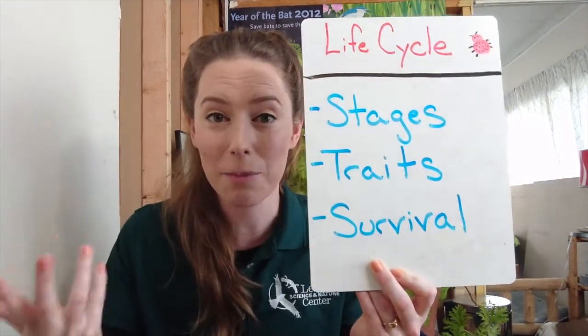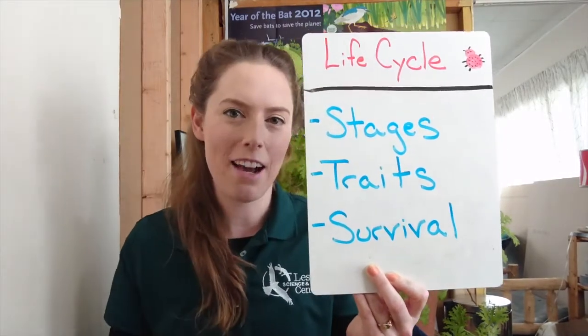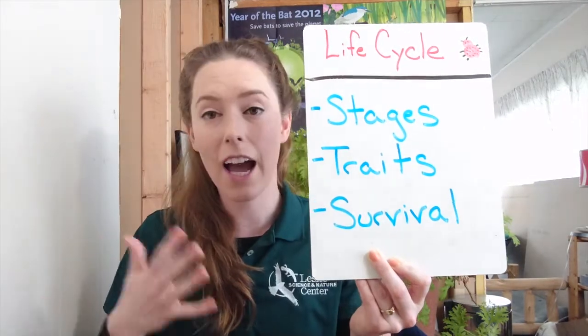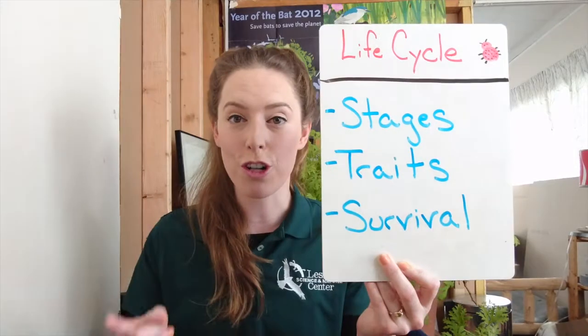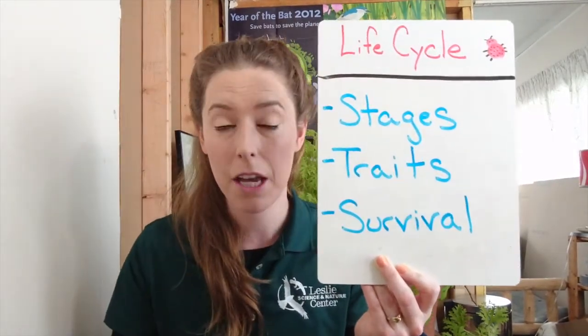That actually ties into the last part too, which is all about survival. The things we see on these organisms at different parts of their life cycle — whether it's how they act, how they reproduce, or how they grow — are all dependent on making sure that organism can survive in its native habitat. That's why we see some animals that have wings, some that have fins, some that have gills. A lot of it is dependent on where we find them, where they live, where they thrive, and how they survive.